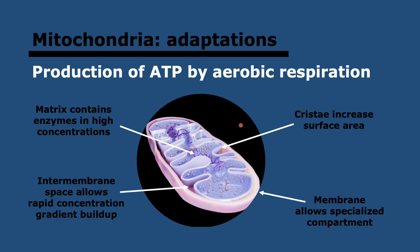SL students will be happy to hear that's the end of this topic — it's really, really short. But for those doing HL, we need to carry on. The mitochondria is a very important organelle. How is it adapted to its function? As you'll know, the mitochondria is in charge of producing ATP via aerobic respiration, and it has four structures which are quite important.